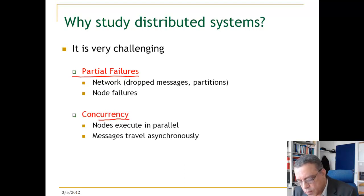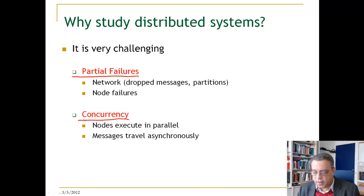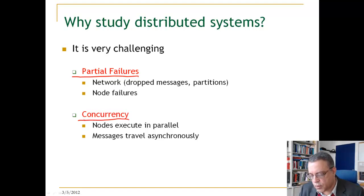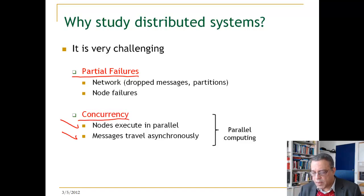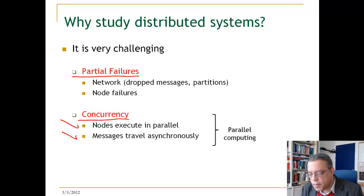The other issue is concurrency. If you want to build a distributed application, it is in fact a concurrent application. There are parts of this application running in each node in the system, so it executes in parallel and messages travel asynchronously. When we talk about concurrency, we think of parallel computing — using programs running on multiple machines to improve performance. But the other important part is that some of these nodes might fail. So distributed systems handle both concurrency and partial failures.